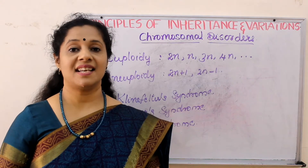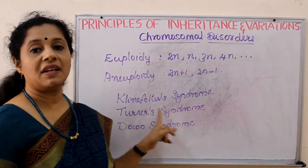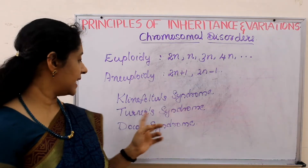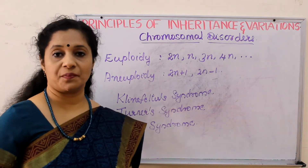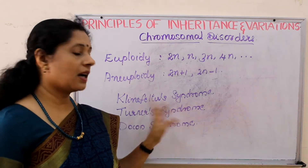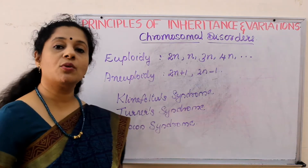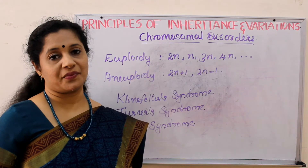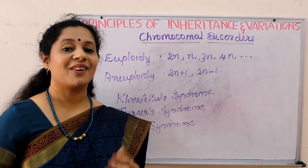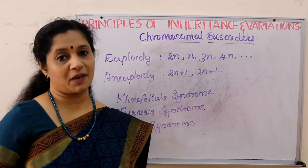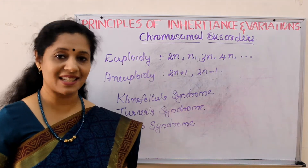We are studying three types of chromosomal disorders in this chapter. One is Klinefelter's syndrome, second is Turner's syndrome, and third is Down syndrome. The first two are related to sex chromosomes, whereas Down syndrome is due to an autosomal chromosome. Autosomes means the 22 pairs of chromosomes, while allosomes are the last one pair determining sex, or the sex chromosomes.